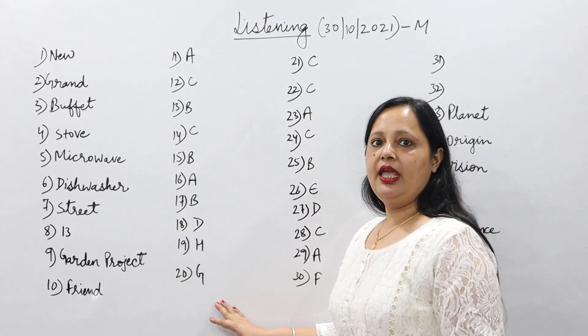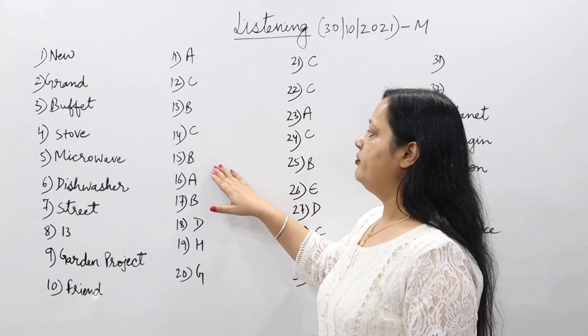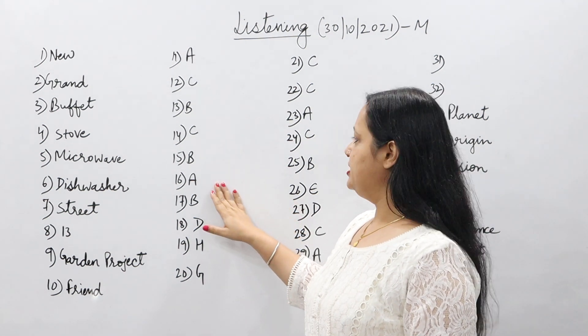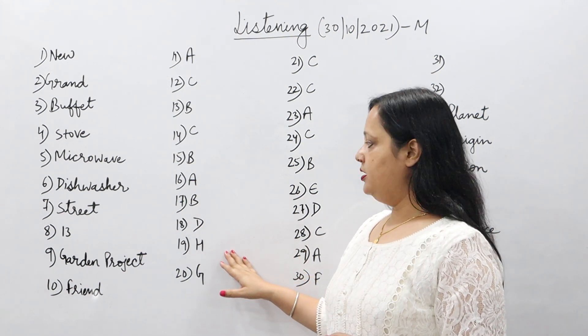Eleventh is A, twelfth is C, thirteenth is B, fourteenth C, fifteenth B, sixteenth A, seventeenth B, eighteenth D, nineteenth H, twentieth G.